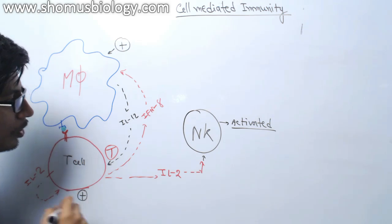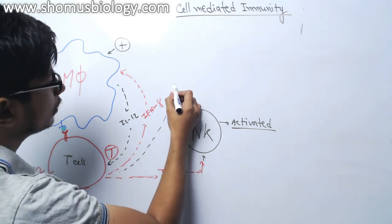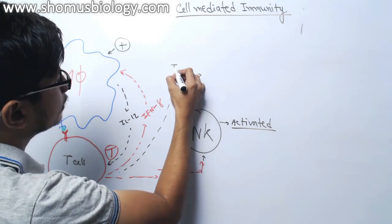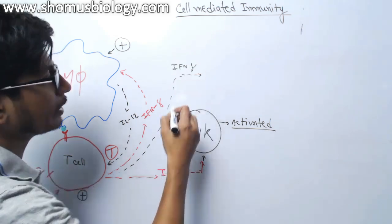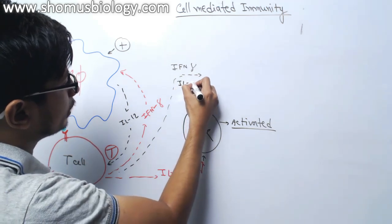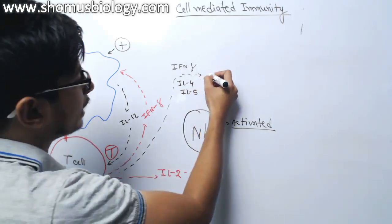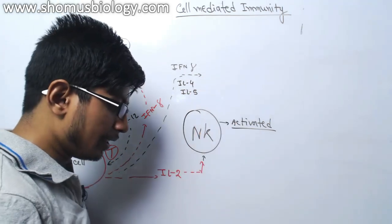It also starts secreting some other cytokines. This interferon gamma acts on many other types of cells. They also secrete interleukin-4, interleukin-5. Some of that also acts on B-cells.